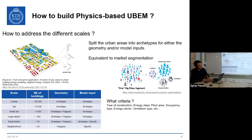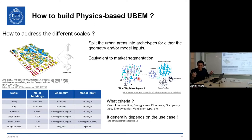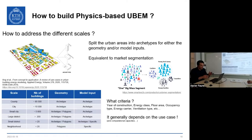The criteria for clustering — whether to split by construction year, energy class, floor area, occupancy type, energy carrier, ventilation type, etc. — depend on the use case and computational capacity. The smallest cluster possible is best, but having 85,000 clusters is useless. It's always a balance between your computational capacity, target, and desired precision.